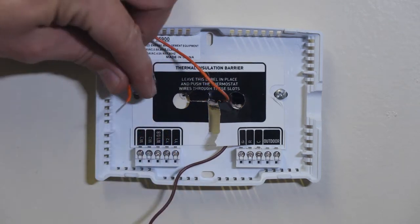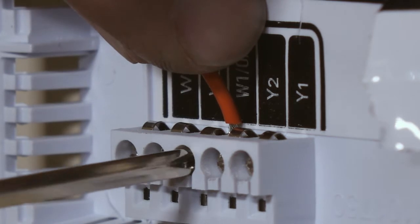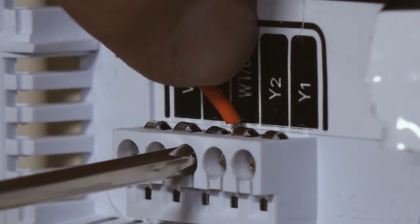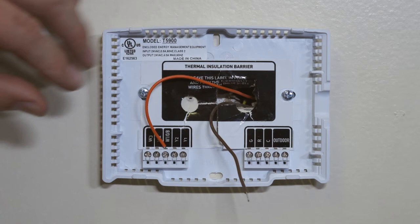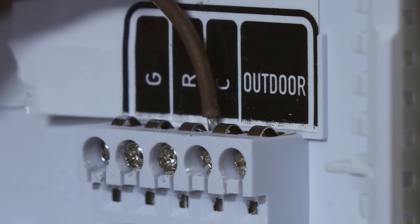Connect the orange wire to the W1 terminal. The brown wire goes to the common or C terminal.